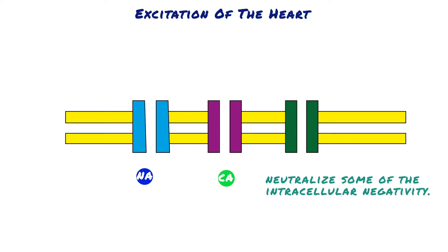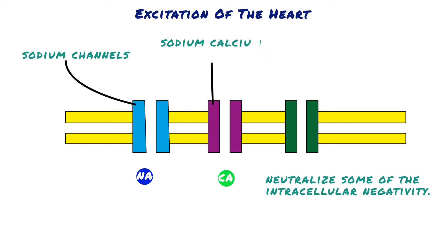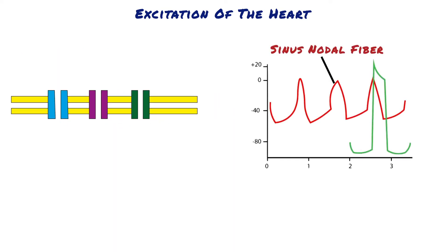Cardiac muscle has three types of membrane ion channels that play important roles in causing the voltage changes of the action potential: fast sodium channels, slow sodium-calcium channels, and potassium channels. The first is a Na+ channel which opens at approximately negative 60 mV.